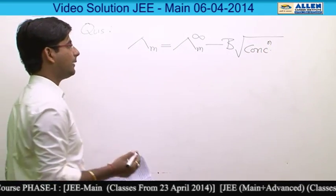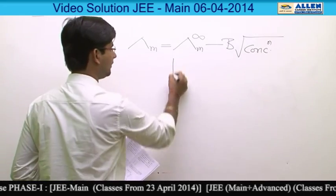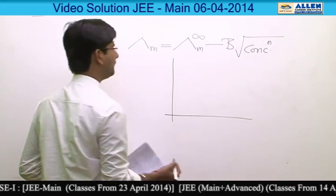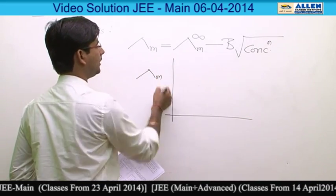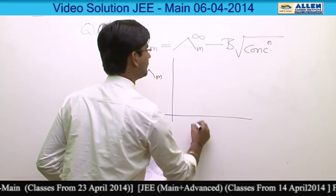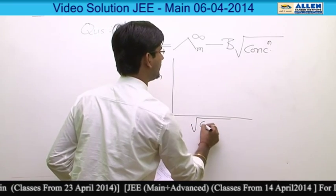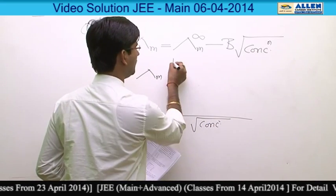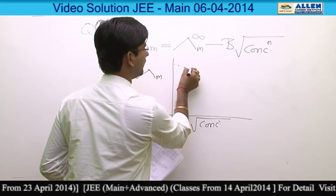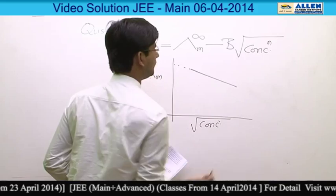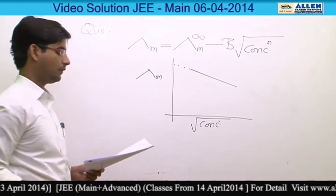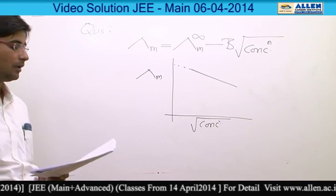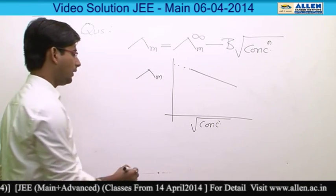According to experimental data, the graph of molar conductance plotted against square root of concentration is found to be a straight line. So the answer to the given question is 1.